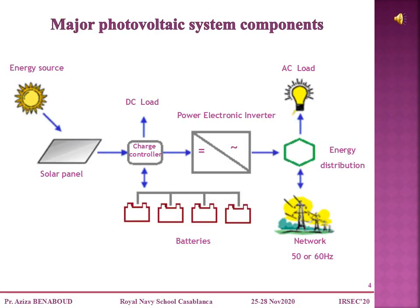In this slide, I cite very briefly the major PV system components. As shown in this figure, the solar panel is the most important element of a PV system. The electric load is not a part of the PV system itself, but it is important to notice if it is DC or AC load. Batteries must have enough capacity to store the energy produced during the day to be used at night and during periods of poor weather.